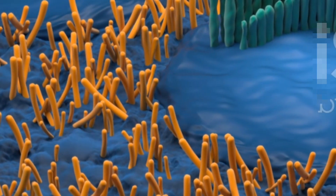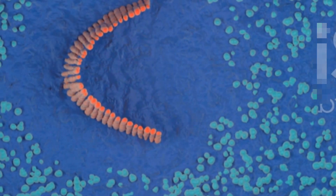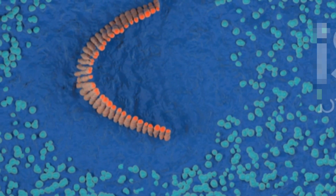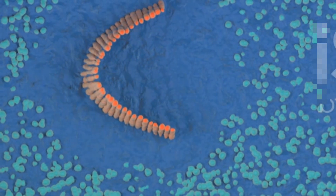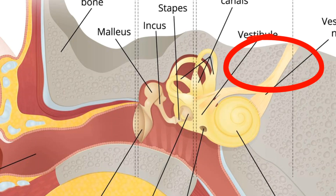This vibration, in turn, bends the hair cells. The bending of these hair cells triggers a cascade of electrochemical events, ultimately generating electrical signals. These signals then travel along the auditory nerve to the brain, where they are interpreted as sound.